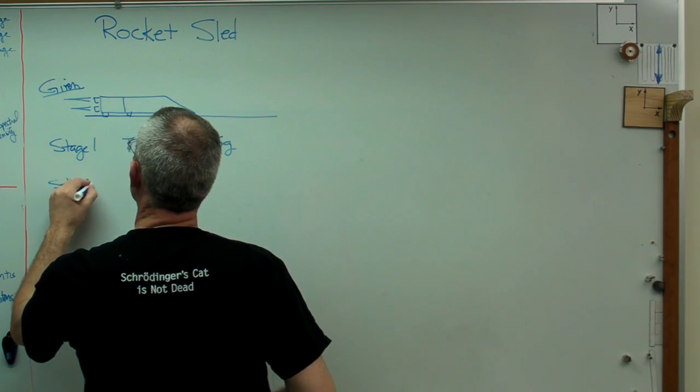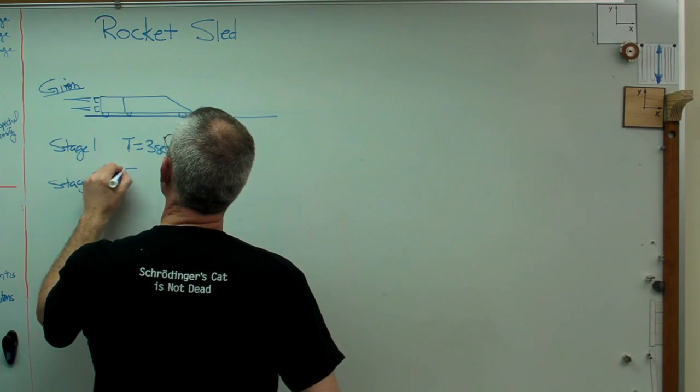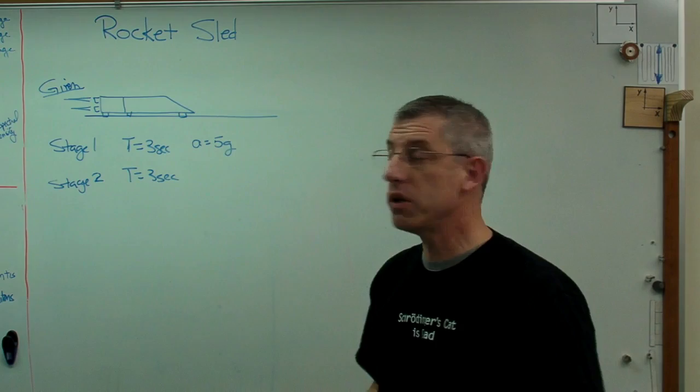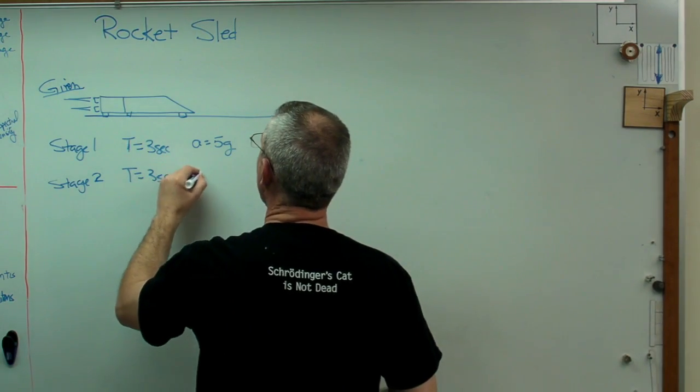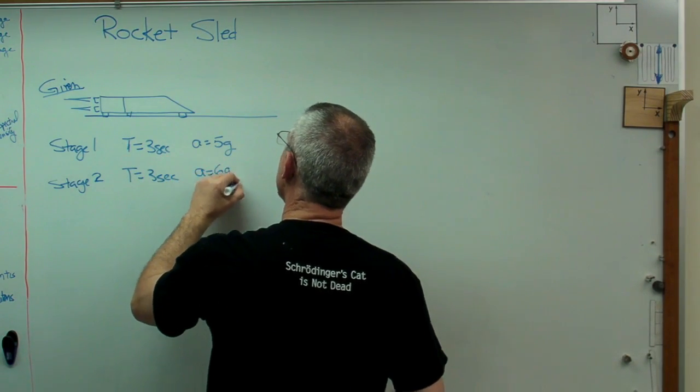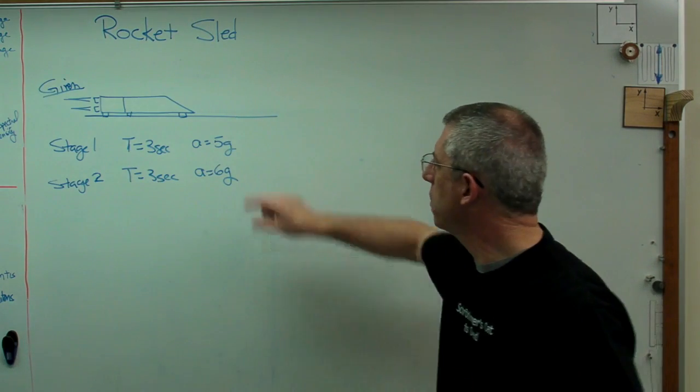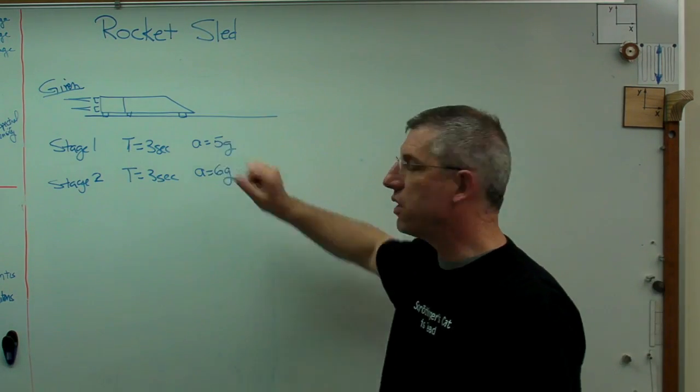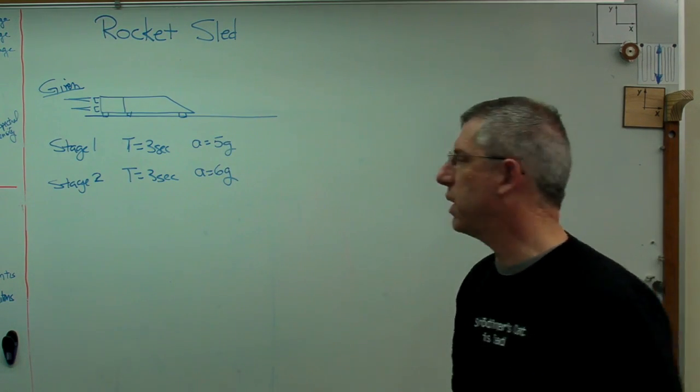Okay. Stage two fires, also burns for three seconds. Let's say perhaps it's the same motors, the same set of motors. And since it weighs less, now maybe the acceleration is six G. Again, maybe a low number, but these are okay. We can work with these numbers. The problem doesn't really change any if you change those numbers. The solution process doesn't change.